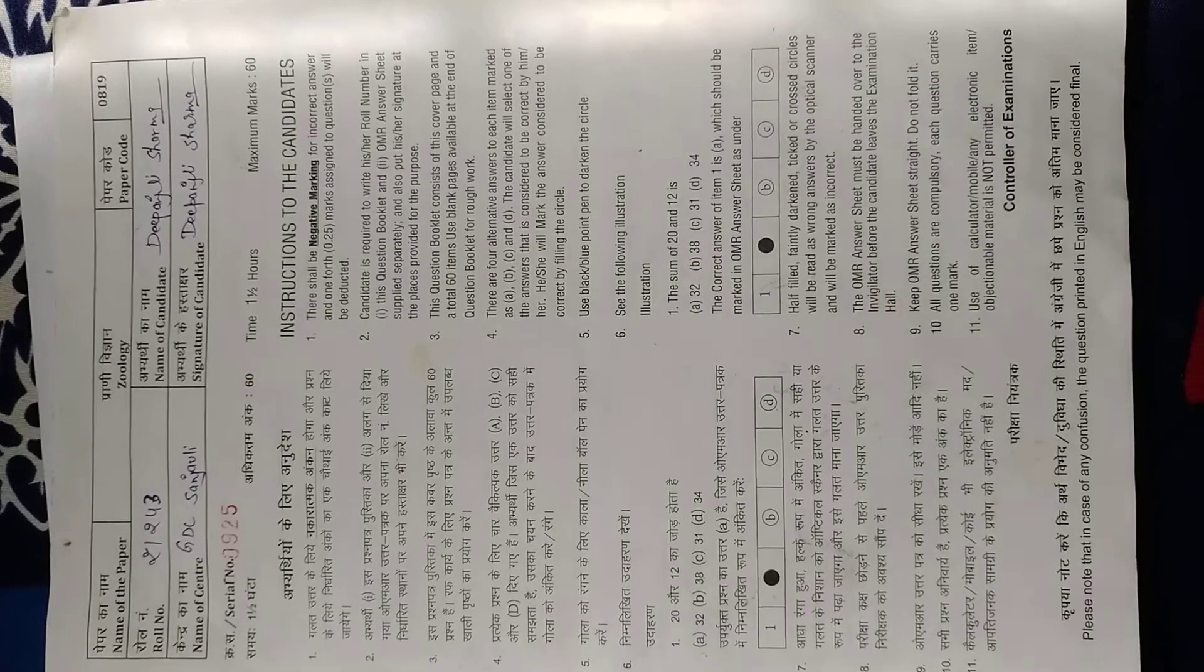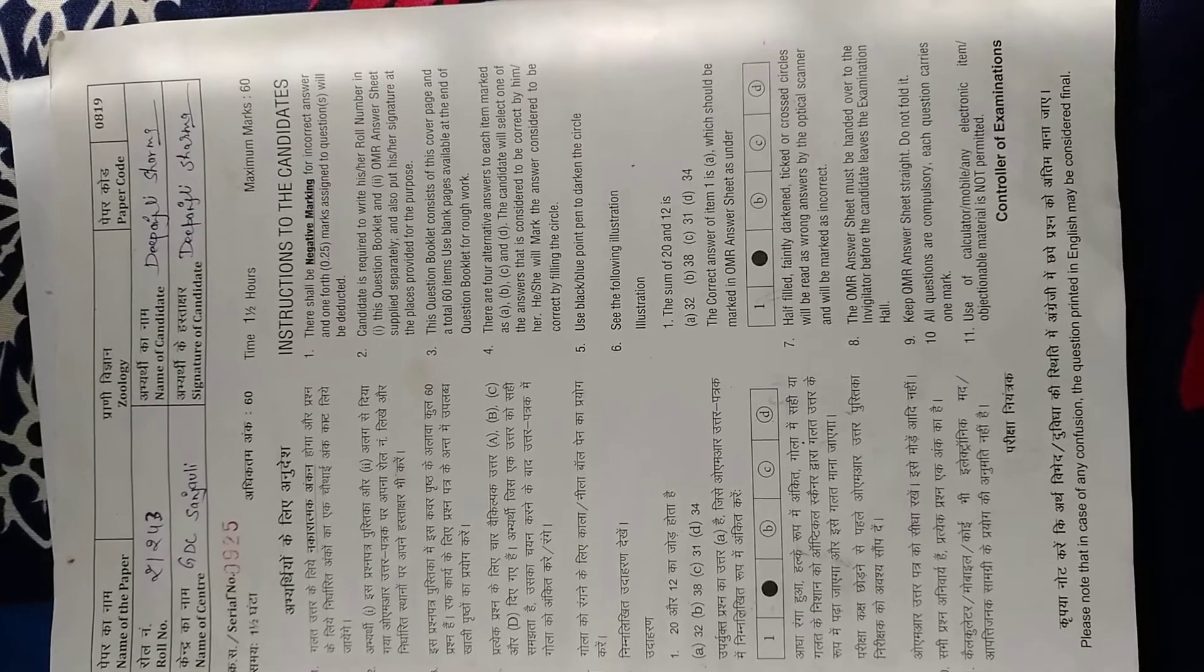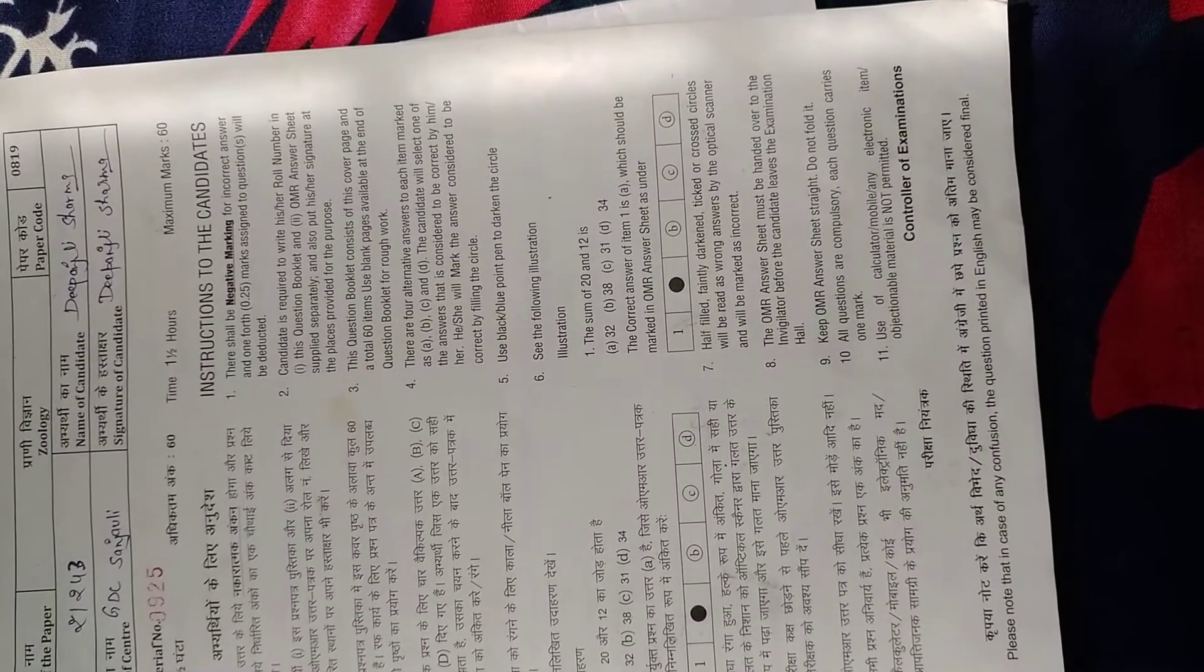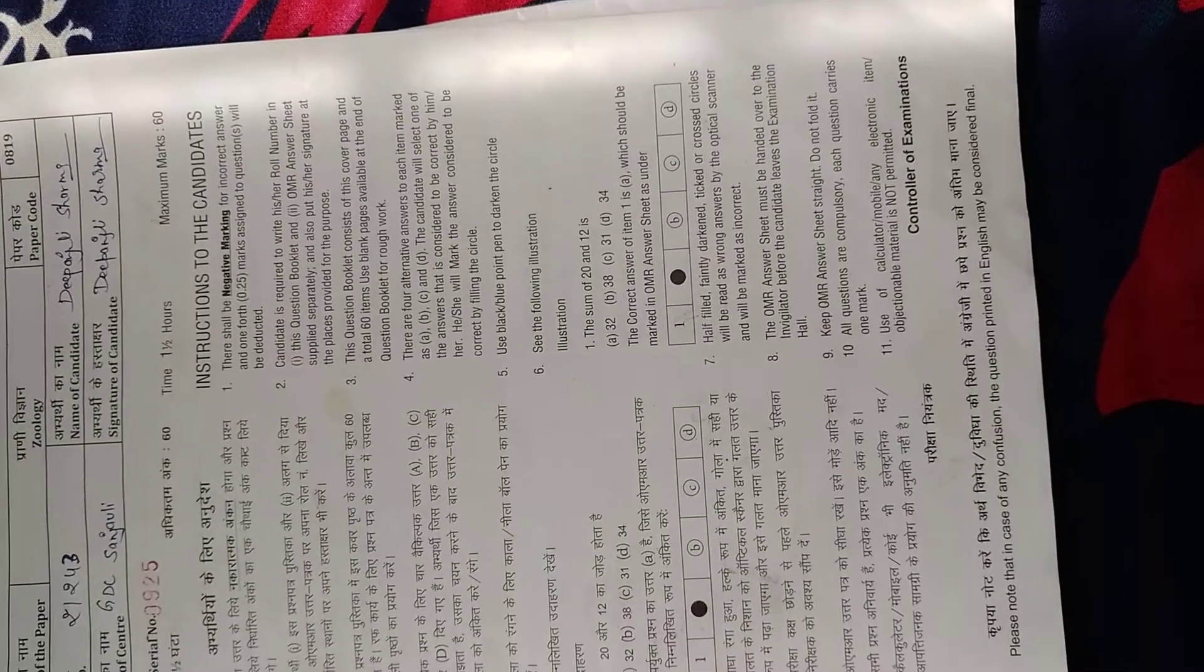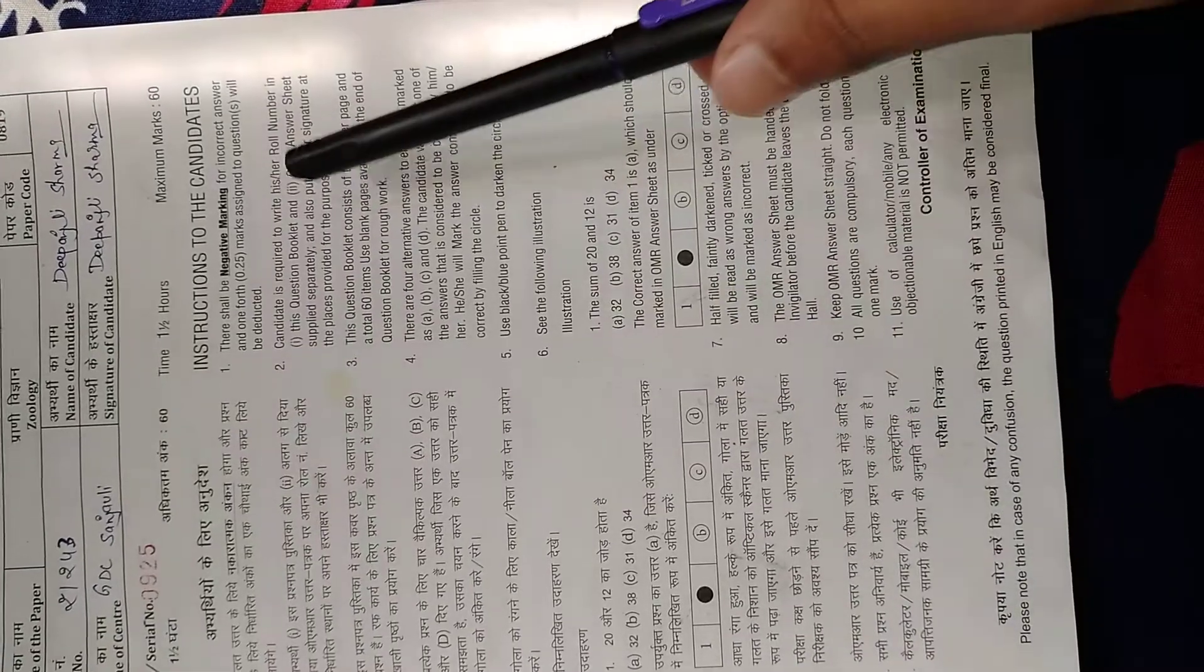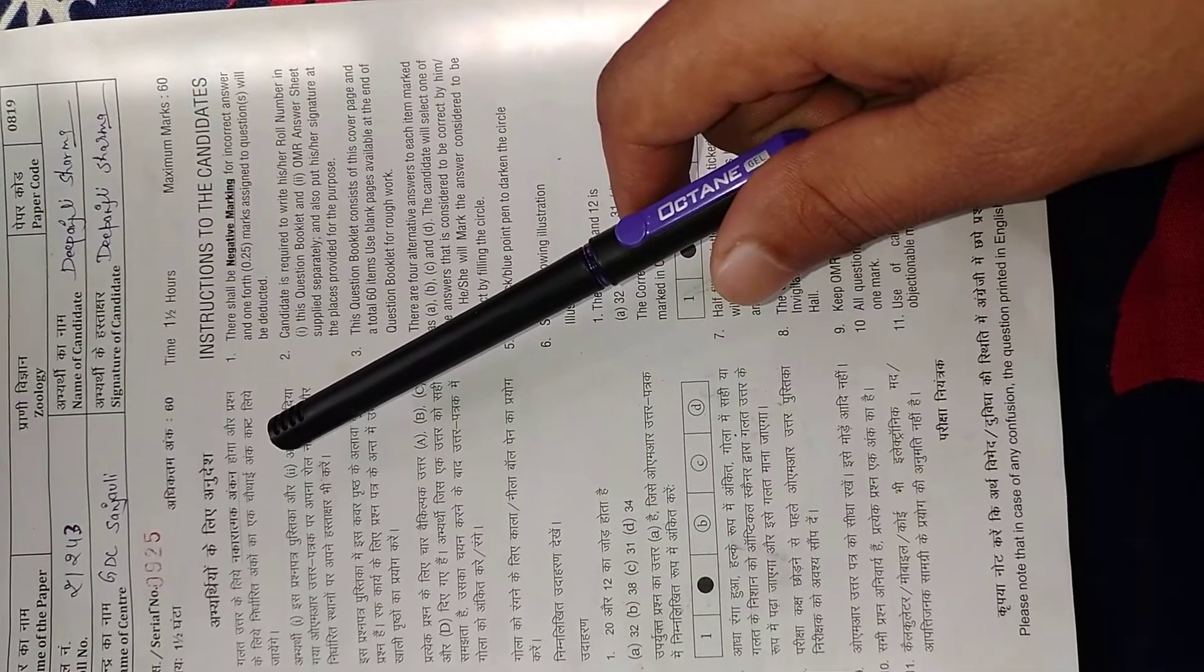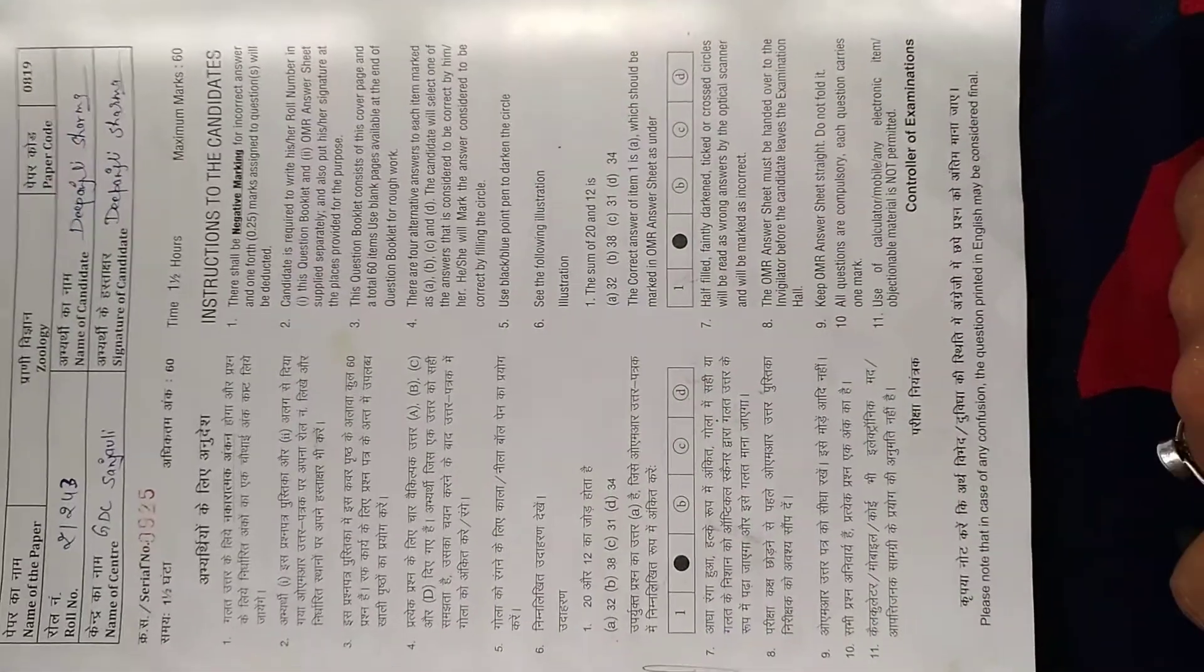Hello everyone, this is my another video and today we are going to discuss Central University of Himachal Pradesh entrance exams. This is the question paper of MSc Zoology entrance. Here you can see the instructions - there is negative marking, maximum marks are 60, and time given is one and a half hours.